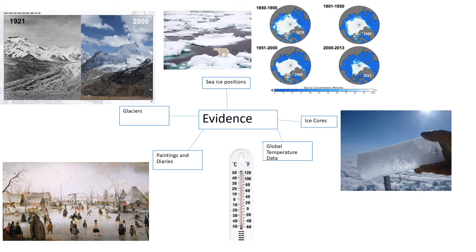Another piece of evidence is paintings and diaries. These allow us to see people's representations of what the environment was like going back several hundred years. Here is a picture showing the River Thames back in the 16th century — you can see it was frozen. We can compare that to today where the Thames never freezes over, showing it was colder back then. The problem is that people might exaggerate, or it might just be one particular extreme weather event rather than longer-term climate.